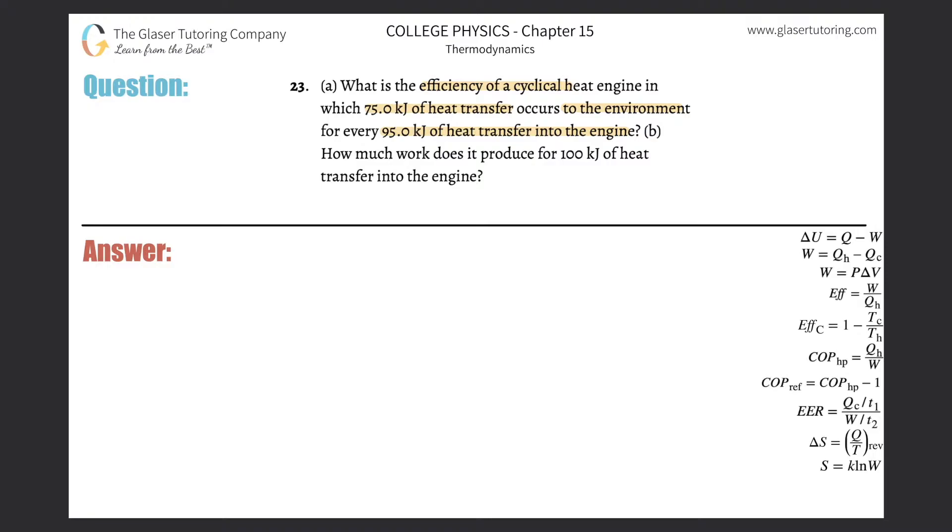All right, so basically we have to find efficiency for a cyclical heat engine. So we know it's this formula over here. The efficiency is equal to the work output divided by the heat of the hot reservoir, a.k.a. the heat inputted into the engine.